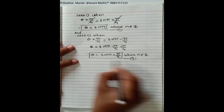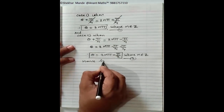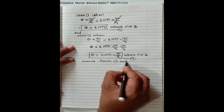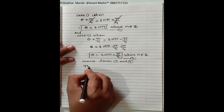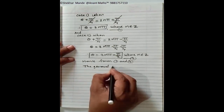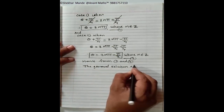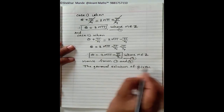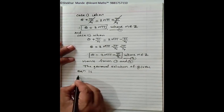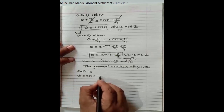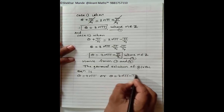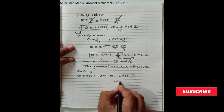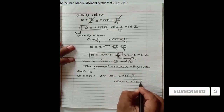Hence, from Case 1 and Case 2, the general solution of the given equation is: θ = 2nπ or θ = 2nπ − π/2, where n belongs to Z.